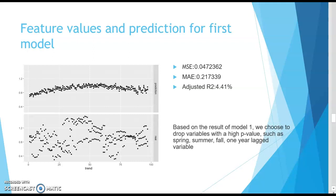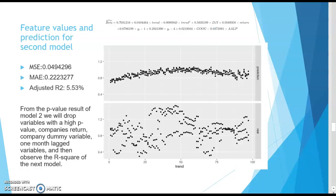Our next approach is to remodel the data using the time series approach and applying the auto-regressive model. In the second iteration, the MSE is 0.04, MAE is 0.22, and the adjusted r-square goes up to 5.53 percent. From the p-value results of model two, we drop variables with a high p-value: the company's return, company dummy variable, and one-month lag variable, then observe the r-square of the next model.